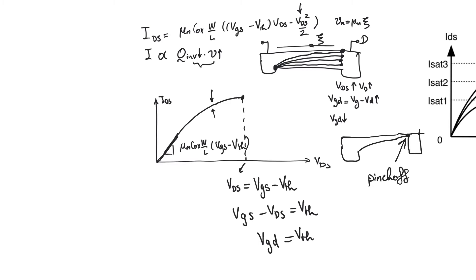Pinch-off means the channel has been completely pinched off at the drain and no longer exists. This doesn't mean that current does not flow — current will actually continue to flow. If we increase V_DS above the pinch-off level (V_DS equals V_gs minus V_threshold), continuing with the parabolic equation would show current decreasing, but this would imply a negative large-signal resistance, which does not happen. Instead, the current saturates at the level seen at pinch-off, and we call this the saturation region.